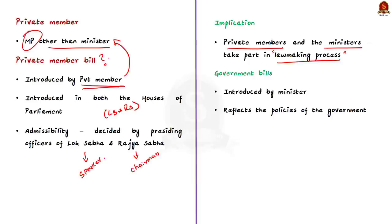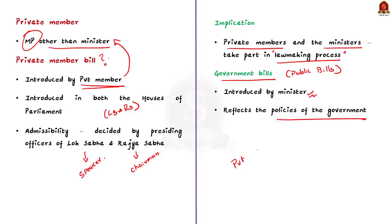What is the bill called when it is introduced by a minister? Bills introduced by ministers are called government bills or public bills. Know that a public bill reflects the policies of the present-day government. So from this, we know there are two types of bills: the government bill introduced by the minister, and the private member's bill introduced by an MP who is not a minister.